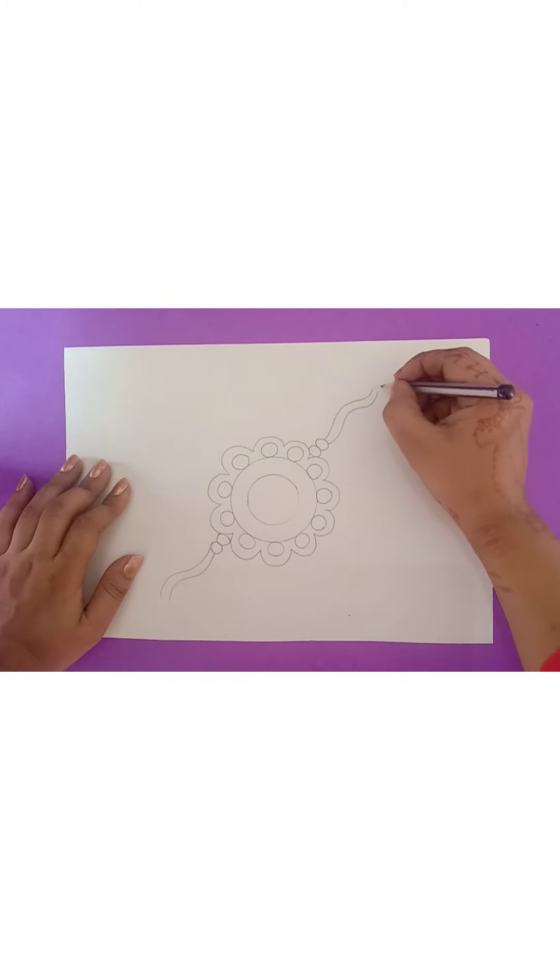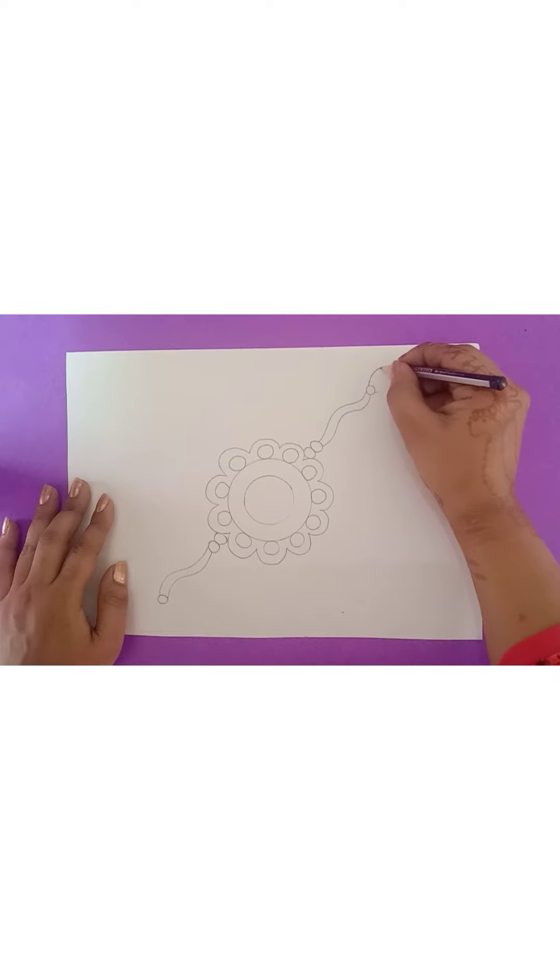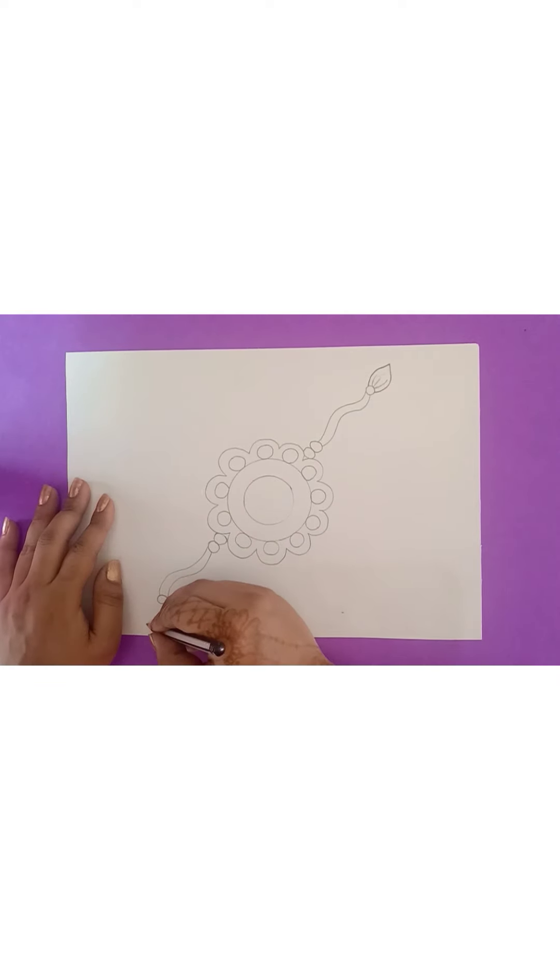Now, here, again, draw small circles. Draw the last part of thread, our Rakhi thread. Look at here. Done.